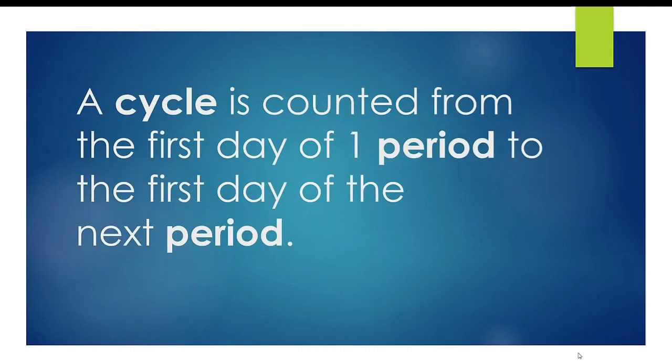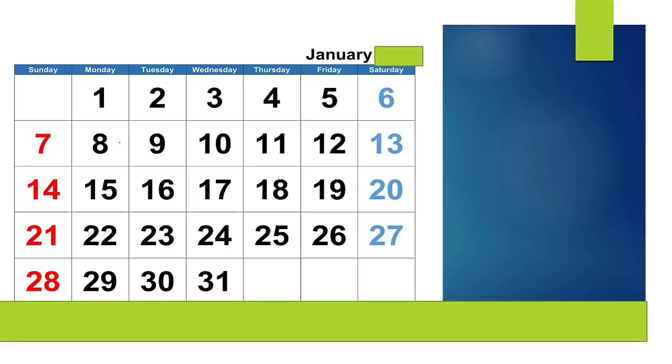A cycle is counted from the first day of your first period to the first day of the next period. To calculate the length of your cycle, start counting on the first day of your cycle.